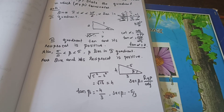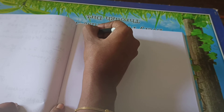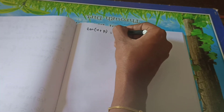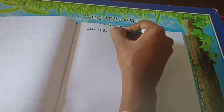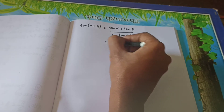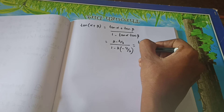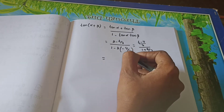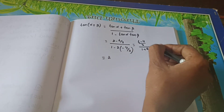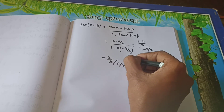Now we are going to find the value of tan(α + β), and also the quadrant in which α + β terminates. So first find tan(α + β). The formula is: tan(α + β) equals tan α plus tan β divided by 1 minus tan α tan β. Substituting: 2 plus (−4/3) divided by 1 minus 2 × (−4/3). That equals (6 - 4)/3 divided by 1 + 8/3, which simplifies to (2/3) ÷ (11/3) equals 2/11. So tan(α + β) equals 2/11, which is greater than 0.